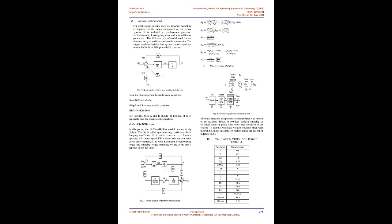For stability, both K and D should be positive. If D is negligible, then the characteristic equation s1,2 equals ±√(K1·ωb / 2H) = ±jωn. In this paper the Heffron-Phillips model shown in Fig 1.4: Ks is called synchronizing coefficient, Kd is damping coefficient, H is inertia constant, s is Laplace operator, ωb is rated speed, Td0' is direct axis transient open circuit time constant, K1 to K6 are K constants.